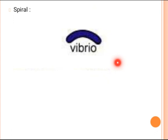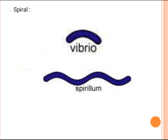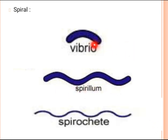In spiral-shaped bacteria, we have Vibrio, which is a comma-shaped bacterium. We also have Spirillum and Spirochetes. Spirillum are thick while Spirochetes are thin. On the basis of these different shapes, we can classify bacteria.